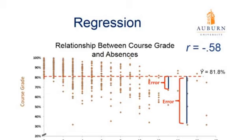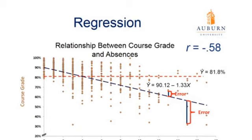Our goal with regression is to minimize or reduce the error in our predictions. One way we can do that is by adding predictors. In this case, we may add a predictor of absences. If we add a predictor and get a better estimate with less error, then we can do a better job of predicting students' grades at the end of the semester. Adding absences allows us to create a new line that best represents course grades given the number of absences students have — that's what the blue dashed line represents: our new line of best fit.